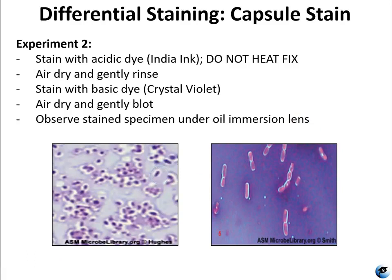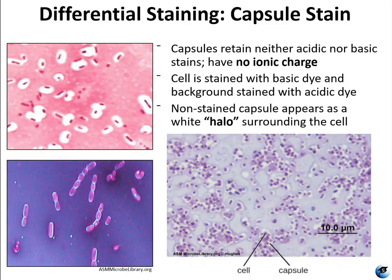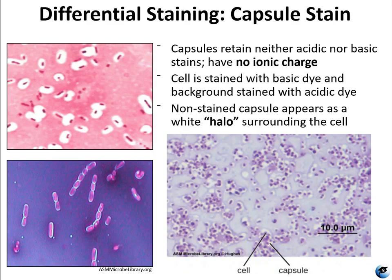What's really difficult about a capsule stain is you have to keep the acidic dye — the negative stain — on the slide while also staining the cells. This means the slides have to air dry twice, which takes quite some time. For that reason, we sometimes are not able to finish the capsule stain during class, and if that happens, you'll have pre-prepared capsule stain slides that you can view.